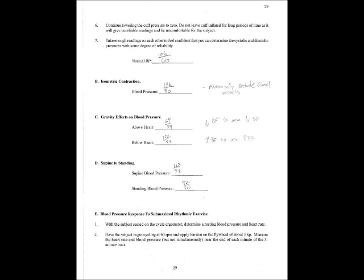The opposite happens below the heart. Below the heart, gravity is actually working to pull blood towards that limb. So you have more blood flow. With more blood flow comes a higher blood pressure. So that's what's going on. That's why we actually got a higher blood pressure below the heart than above the heart.